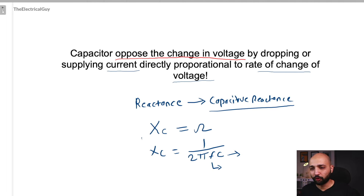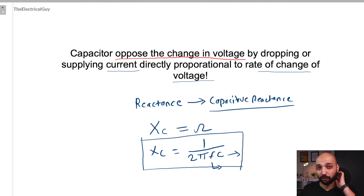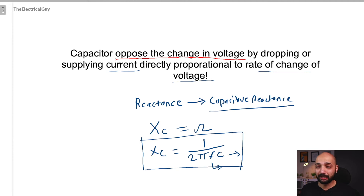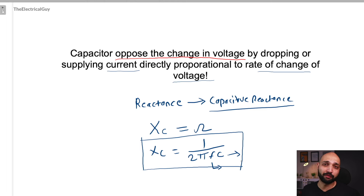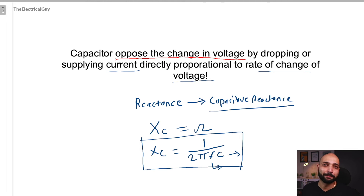Using this simple formula you can calculate the capacitive reactance offered by a particular capacitor and identify the current flowing through the circuit. One major difference between inductive and capacitive reactance is that inductive reactance is directly proportional to frequency, but here in the case of capacitive reactance, frequency is inversely proportional to capacitive reactance. Meaning if your frequency increases, the capacitive reactance will decrease, and if your frequency decreases, your capacitive reactance will increase.